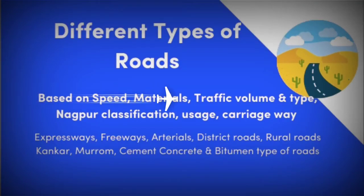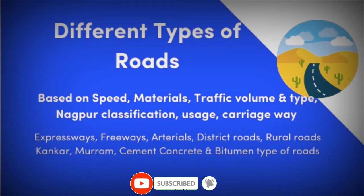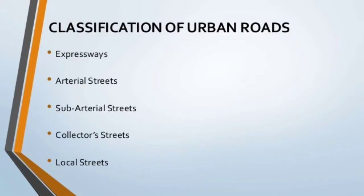Today we look at different types of roads. Roads are classified based on speed, material, traffic volume, and type of usage. Categories include expressways, freeways, district roads, rural roads, and surface types such as cement concrete and bitumen.